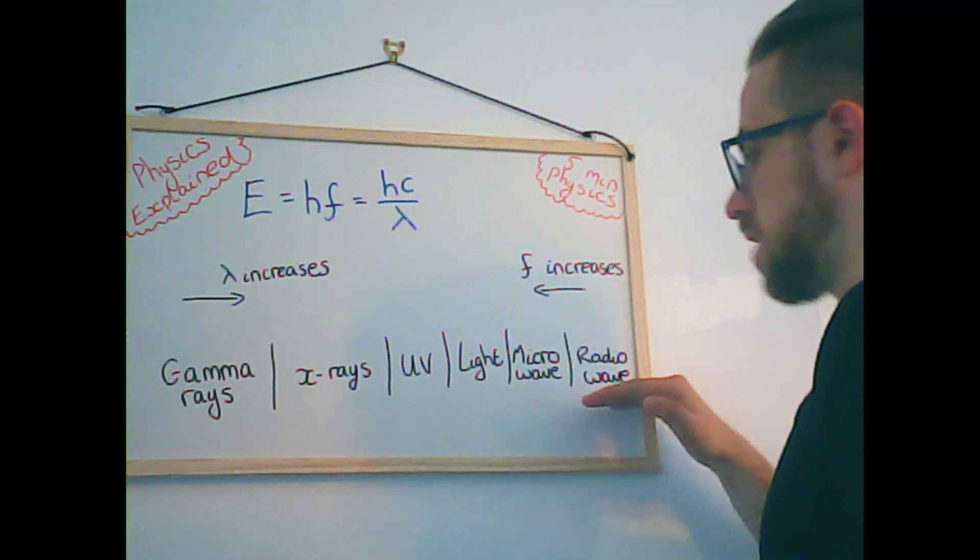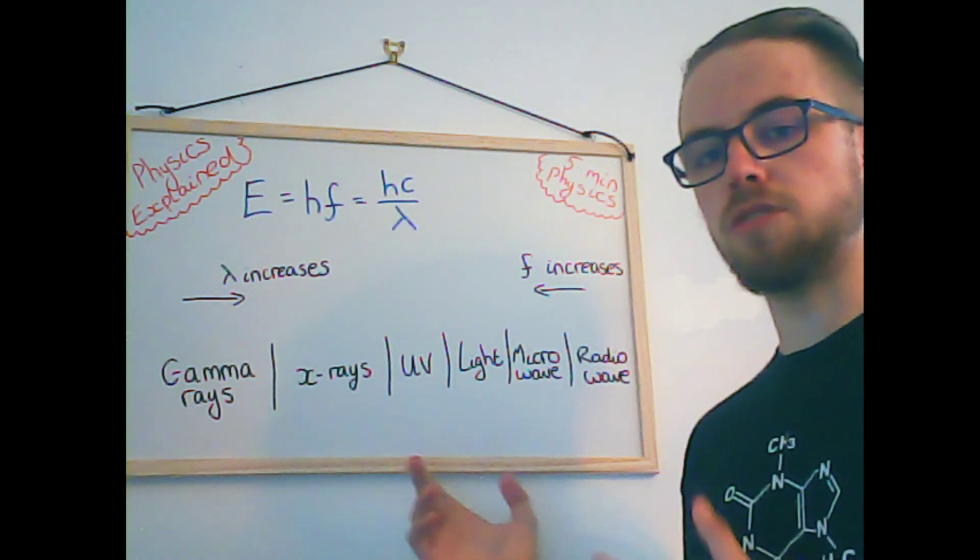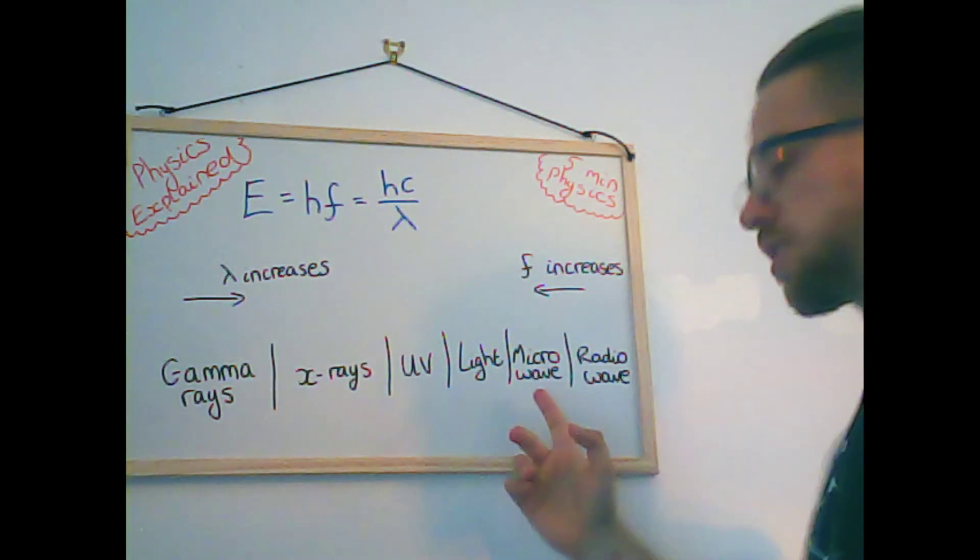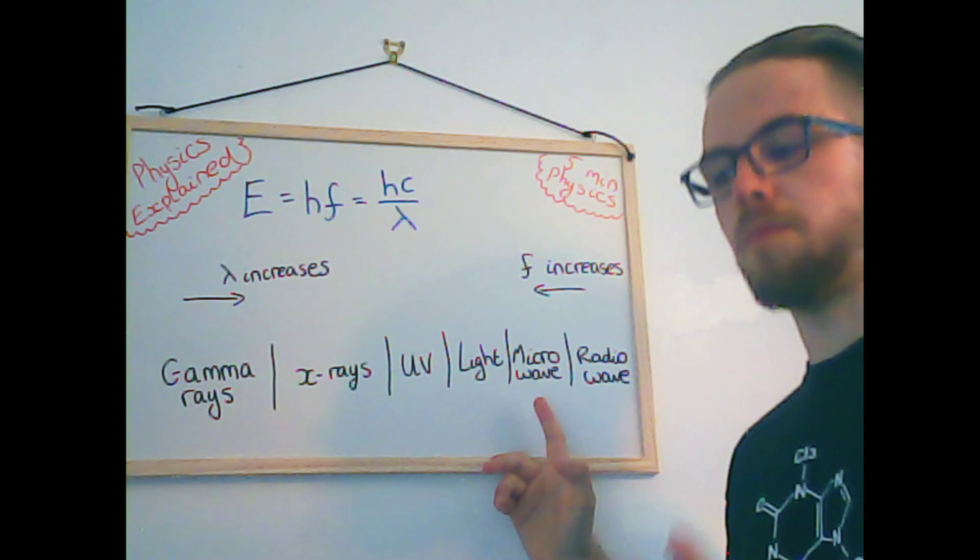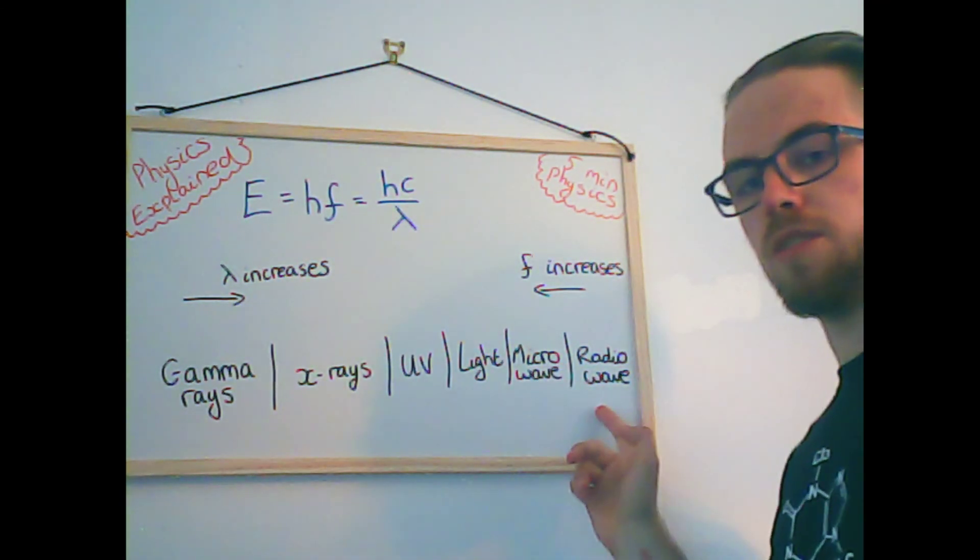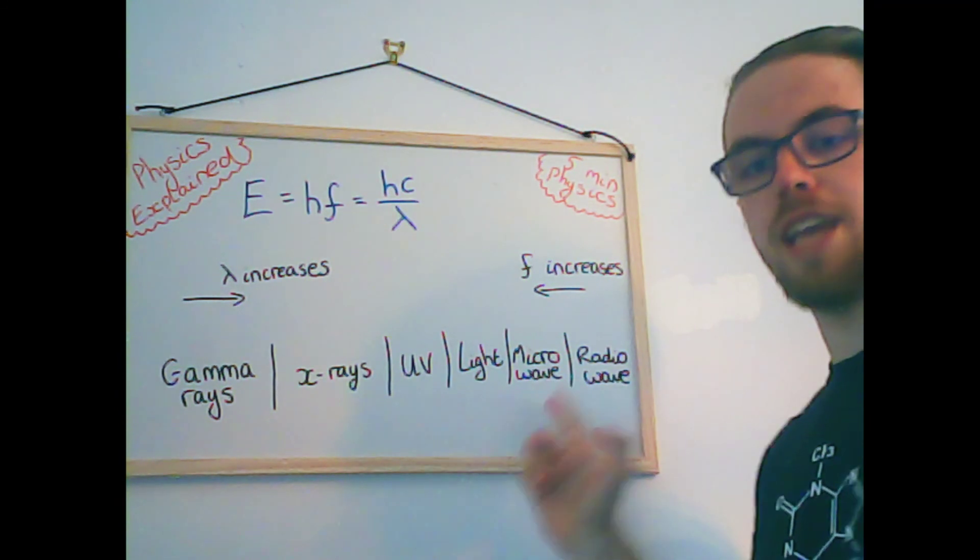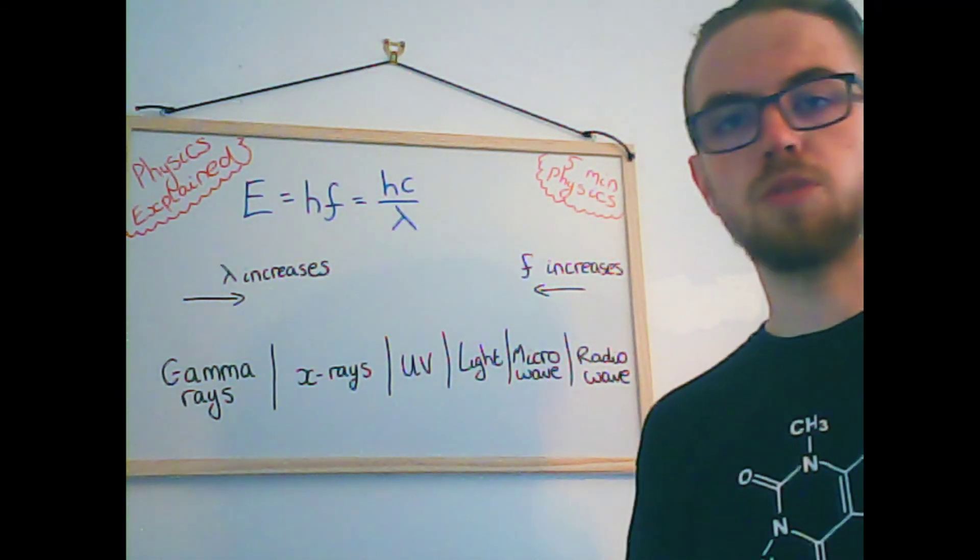And as we increase up this way towards the gamma rays, we find that the energy increases. And this is also very important, because you don't exactly want your microwave oven in your kitchen to emit microwave radiation through the glass dot. The microwaves have more energy than radio waves, which means they're really good at heating up water molecules, which is what we use them for, we use them in cooking appliances.